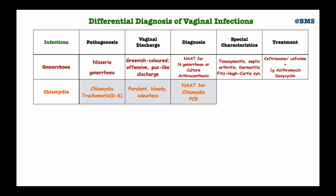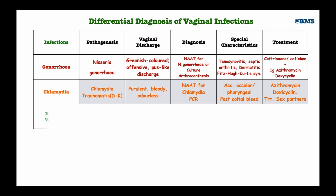PCR helps isolate Chlamydia trachomatis RNA or DNA from vaginal swabs, and also helps differentiate between Chlamydia trachomatis and Neisseria gonorrhoeae since these two infections may coexist in one patient. The special characteristics of chlamydia infection include accompanying ocular and pharyngeal infections, and women usually complain of post-coital bleeding. We treat chlamydia with azithromycin or doxycycline; if gonococcal infection is also suspected, we combine azithromycin with ceftriaxone. In pregnant women, azithromycin is given.